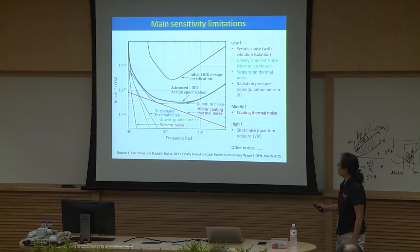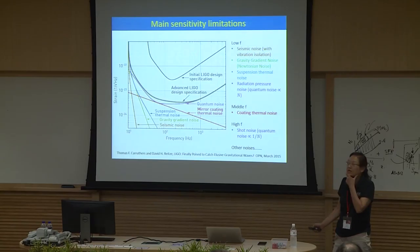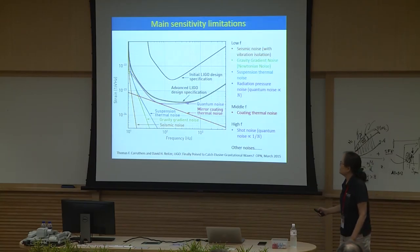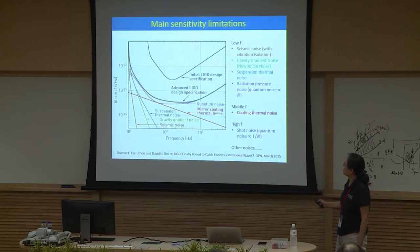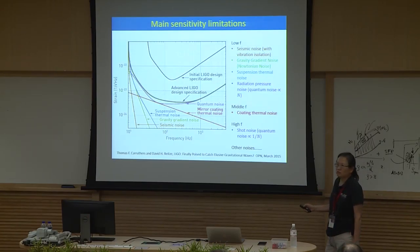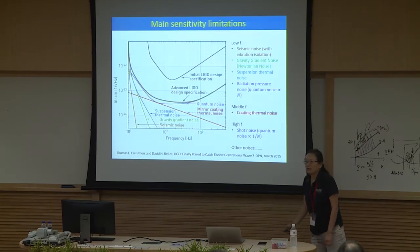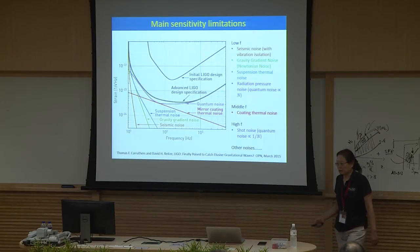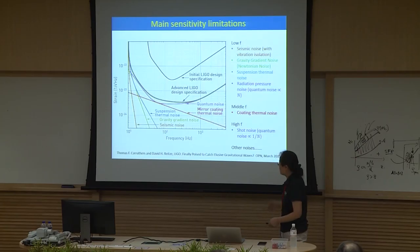At low frequency there's radiation pressure noise — part of the quantum noise, proportional to power. At middle frequency there's coating thermal noise, with vigorous research on coating materials trying to reduce it. At high frequency it's dominated by shot noise, which is a quantum noise — basically a photon counting noise, inversely proportional to power.